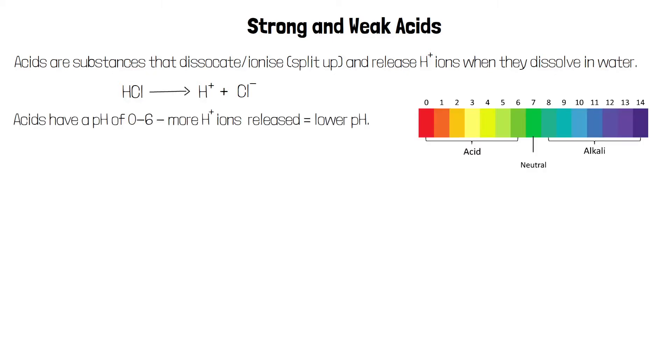Acids have a pH of between 0 and 6. The more hydrogen ions are released, the lower the pH will be.